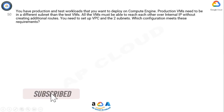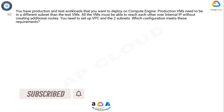Question. You have production and test workloads that you want to deploy on Compute Engine. Production VMs need to be in a different subnet than the test VMs. All the VMs must be able to reach each other over internal IP without creating additional routes. You need to set up VPC and the two subnets. Which configuration meets these requirements?